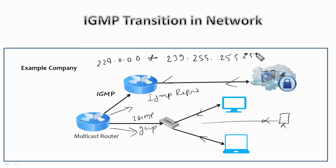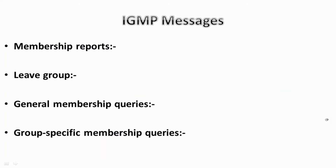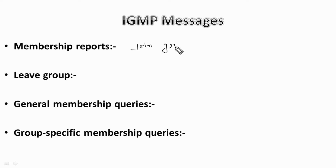Multicast IP addresses have a range from 224.0.0.0 to 239.255.255.255. There are some IGMP messages allowed in the IGMP protocol. The first is the membership report — devices send this report to a multicast router in order to become a member of a multicast group.